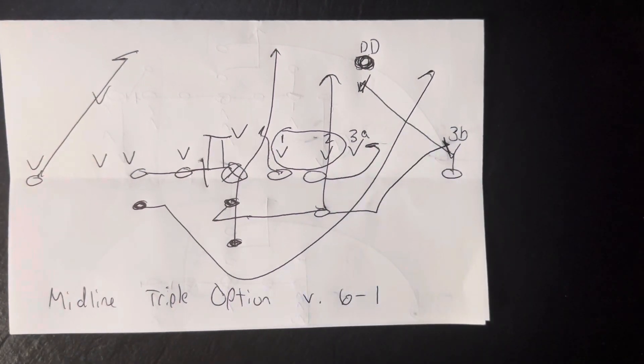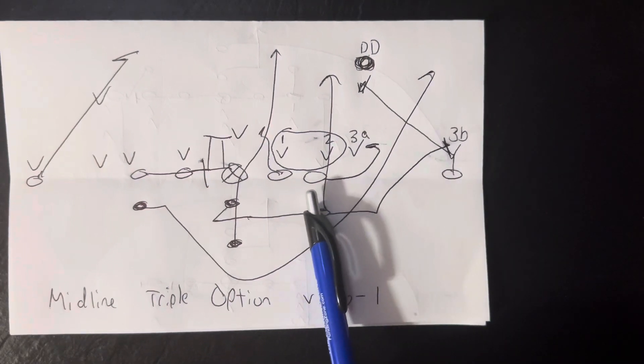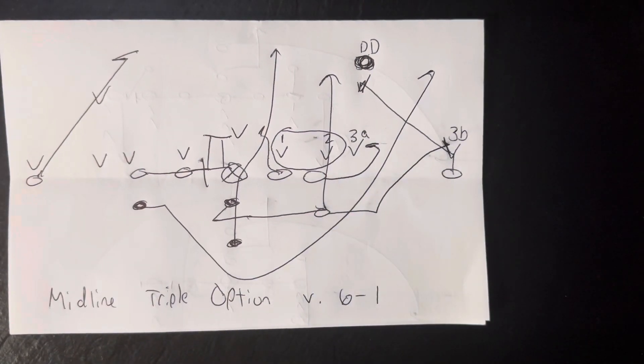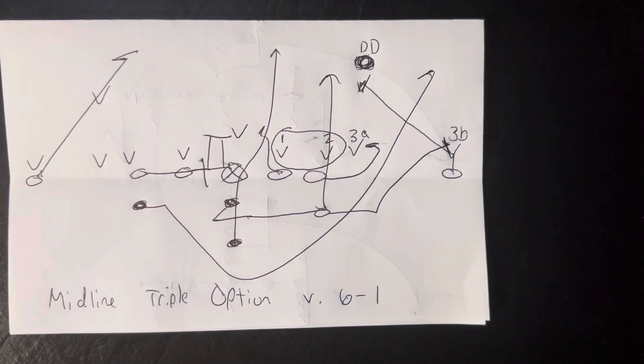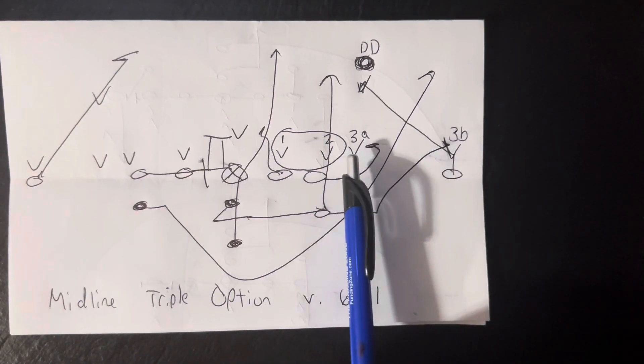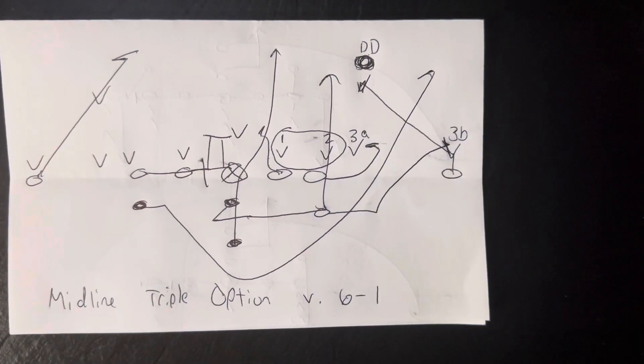So the A-back has to make a tackle, tackle, tackle call to tell the tackle you've got to pull and block the first run support. So the tackle's going to take three flat steps, step at 45 degrees, get his left knee through the crotch of the initial run support, left hand to the stomach, four-inch northbound steps from there.